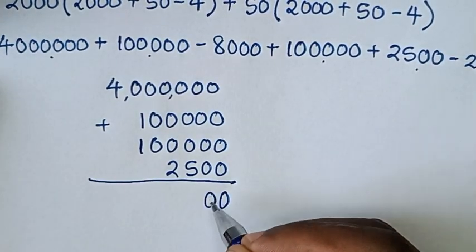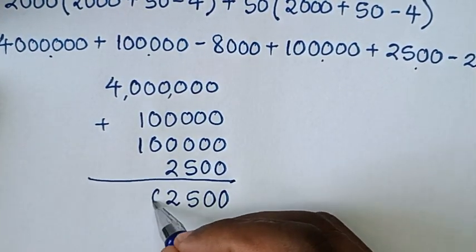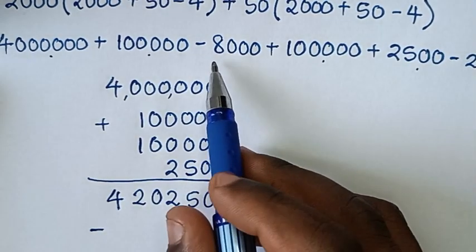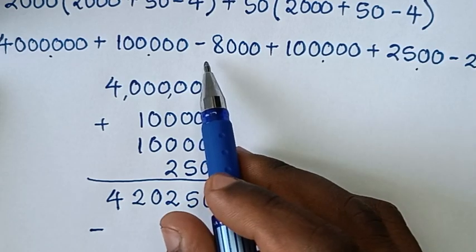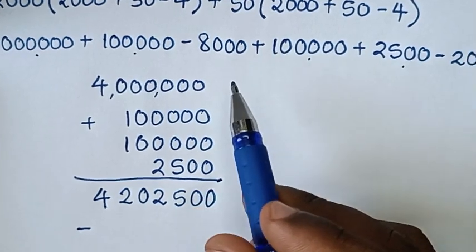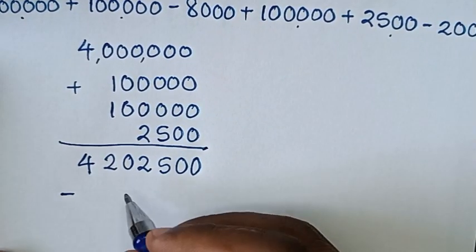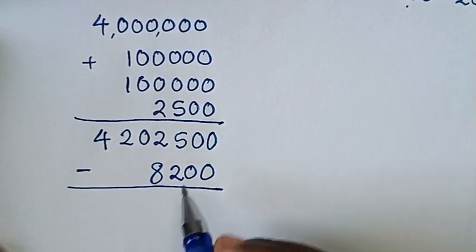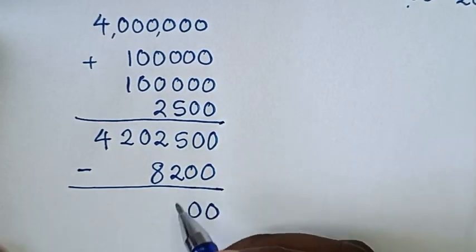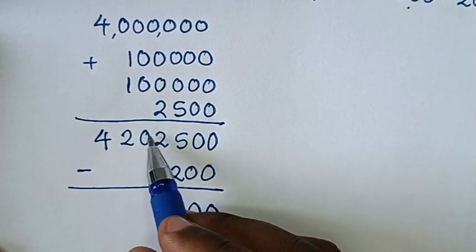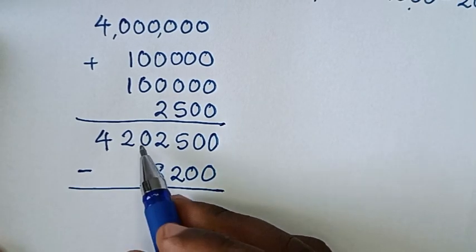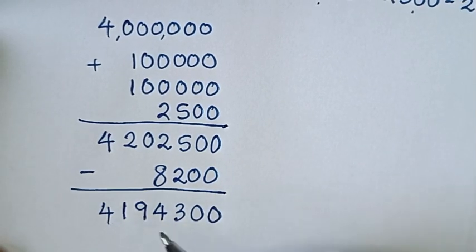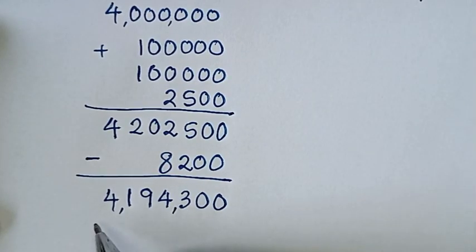So the sum here it will be: 0, 0, 5, 2, 0, 2, 4. Then minus — we subtract this here: minus 800 and 200, it will be minus 1000. So here it will be 0, 0. This it will be 3. Here we borrowed 1, it will be 12 minus 8, it is 4. Here it will be 9. Here we borrowed 1, it will be 1, 4. So this is our final answer.